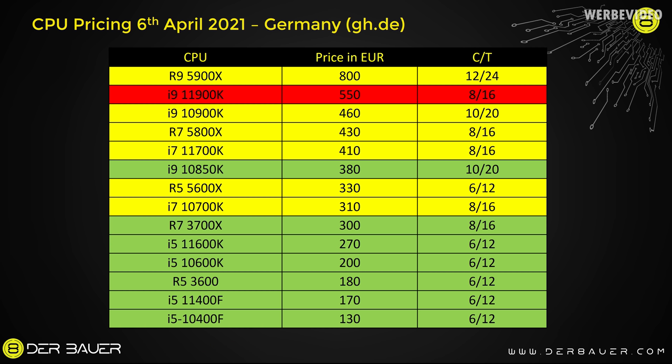The green marked CPUs are ones I can absolutely recommend, though it always depends on what you want to do with your CPU. The yellow marked CPUs I can still recommend depending on your use case. In the center you can see the 10850K, a 10-core CPU, and right now with a quite low price of 380 euro here in Germany, this is a very interesting CPU compared to the 11900K — especially keeping in mind it has 10 cores.